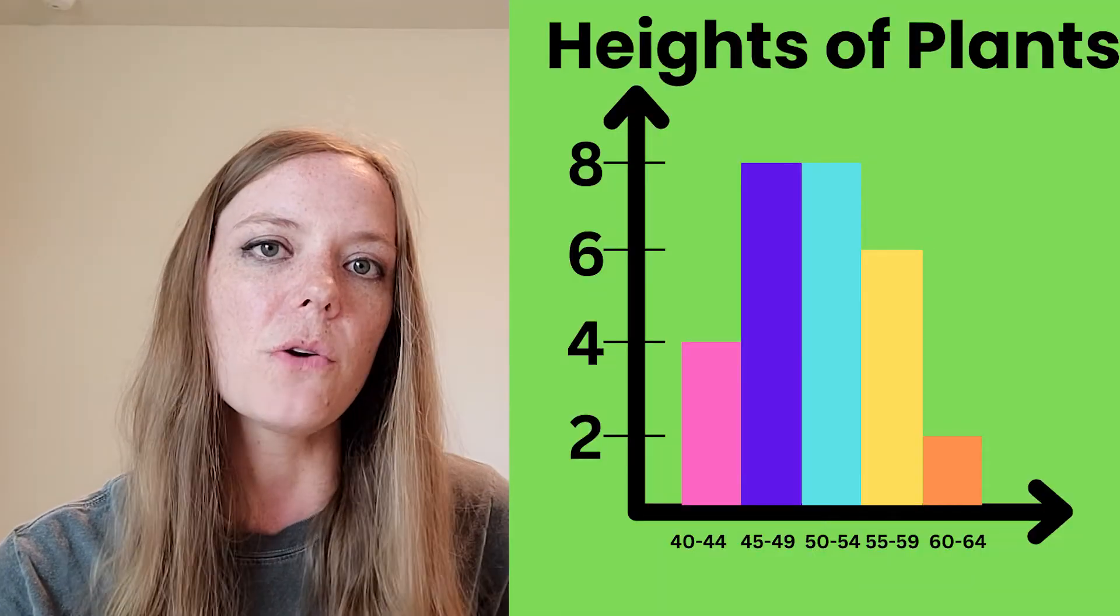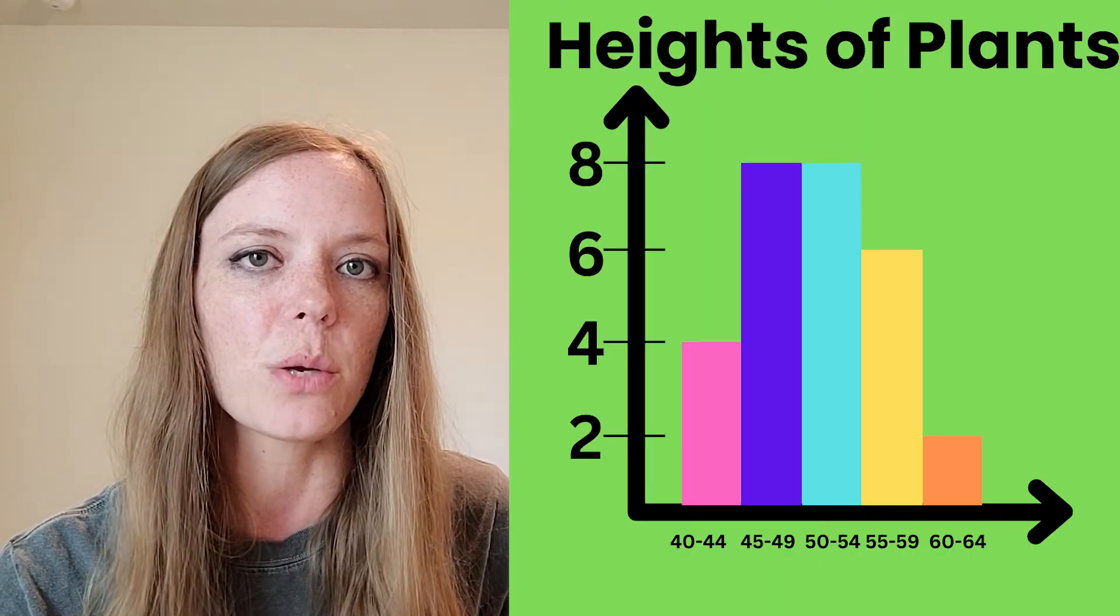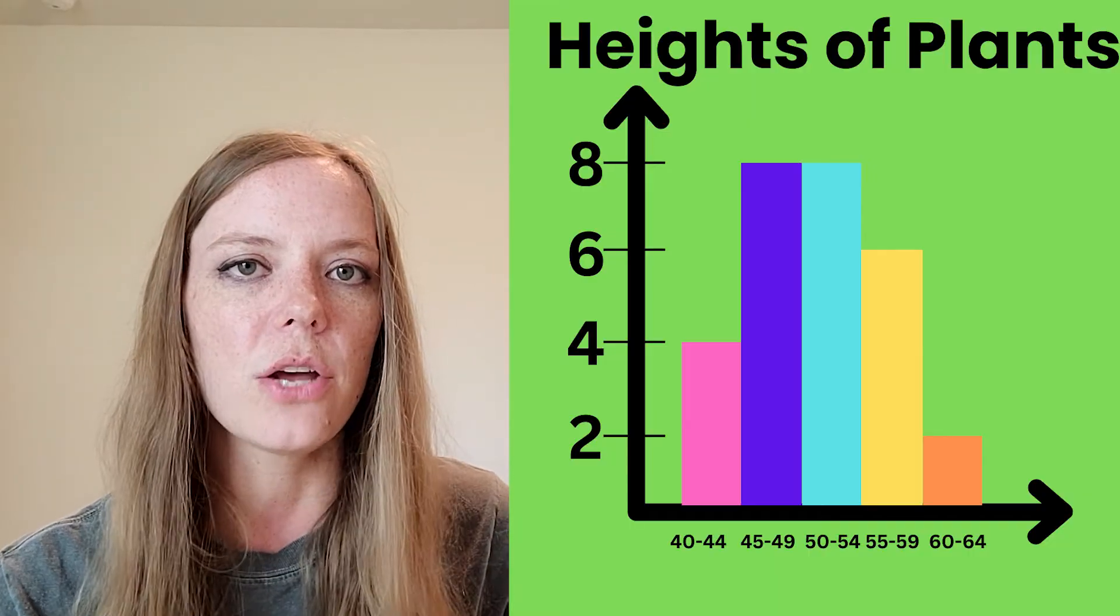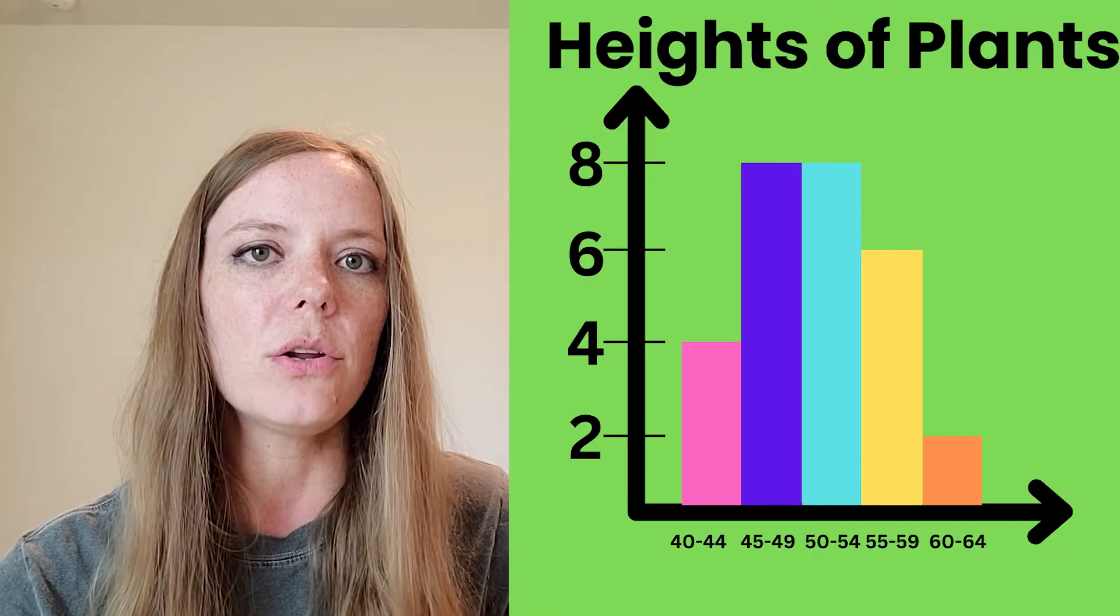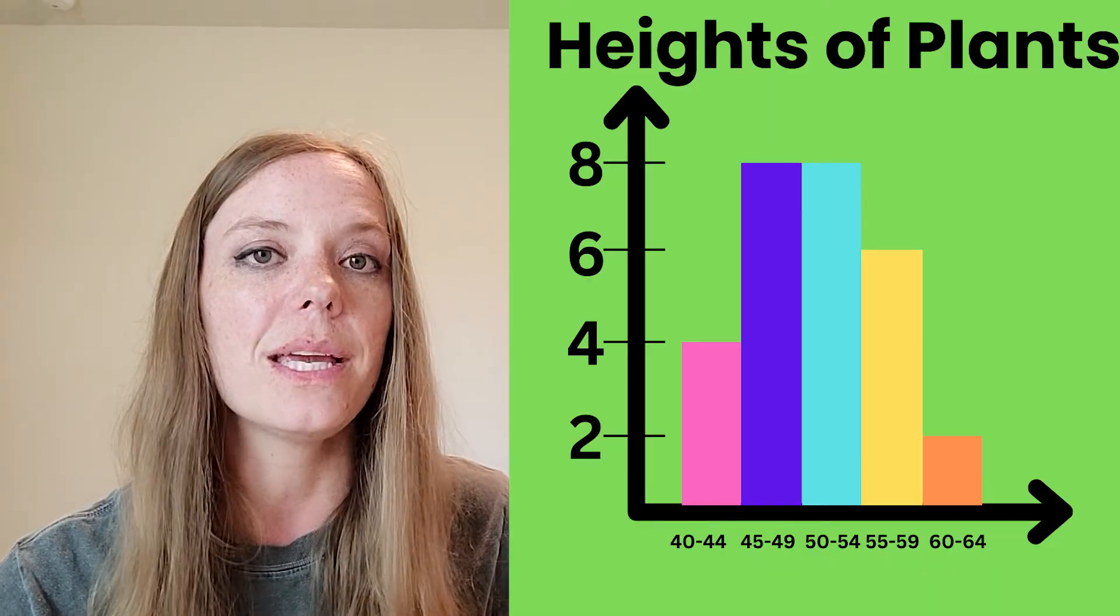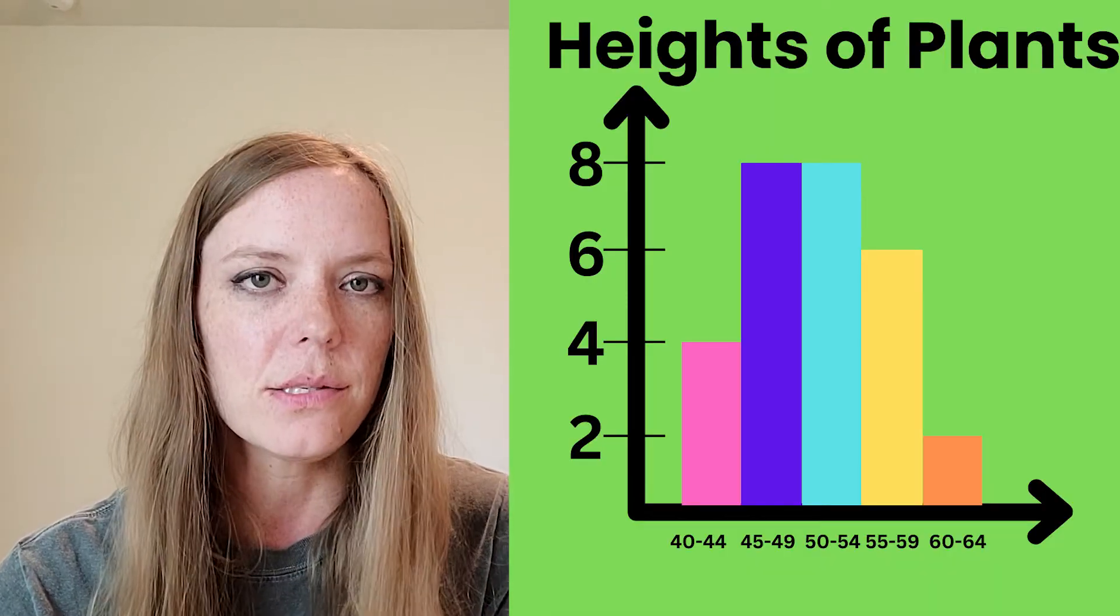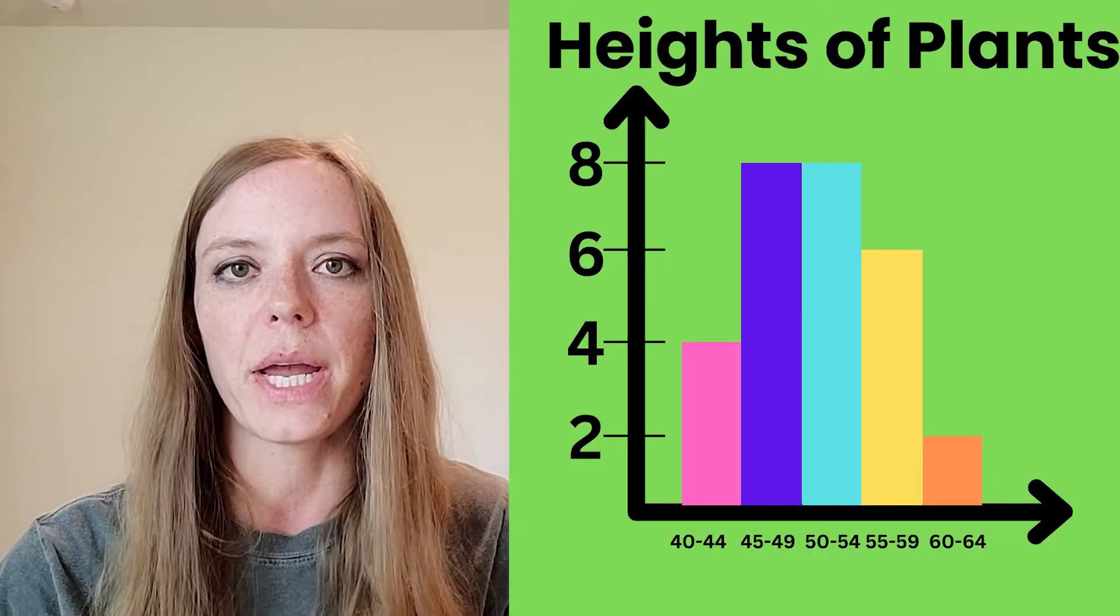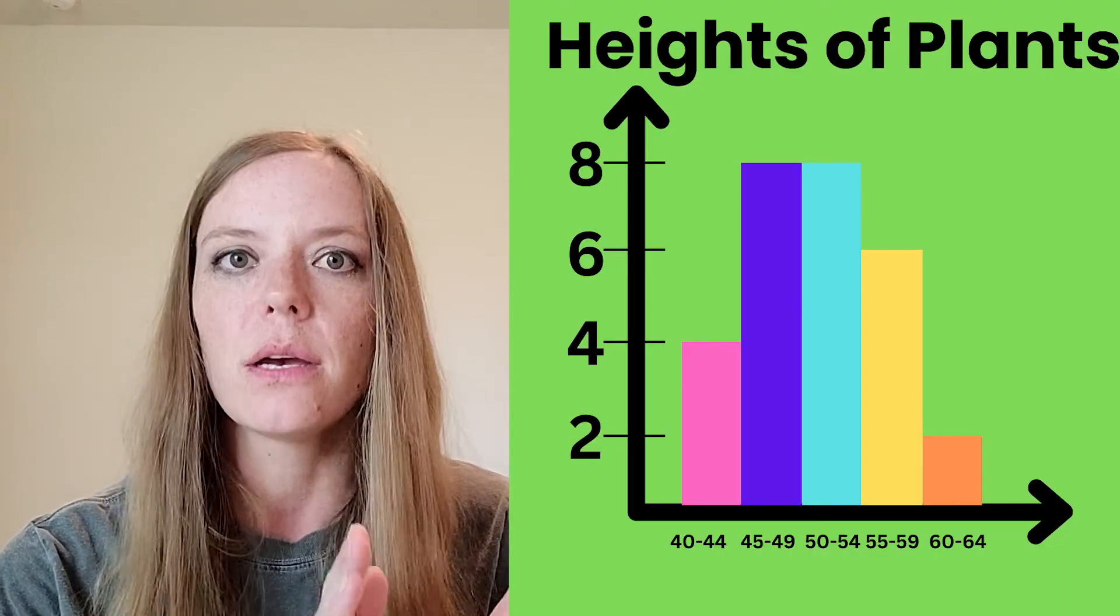So we can put that data into a histogram like this. And so those bars show that exact same information that the frequency table shows. Now in a histogram, one thing to understand is that we're not going to know the specific information about how tall every single plant is. We just know that four of them are in this range of 40 to 44. And now that we've seen our first example, let's go over to the whiteboard to see some more.